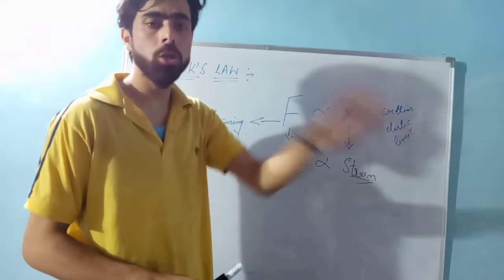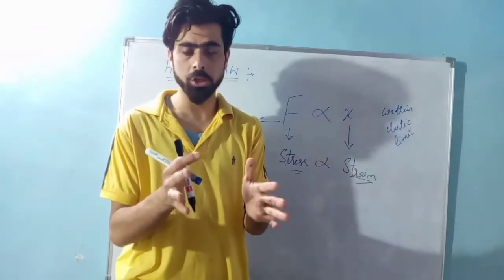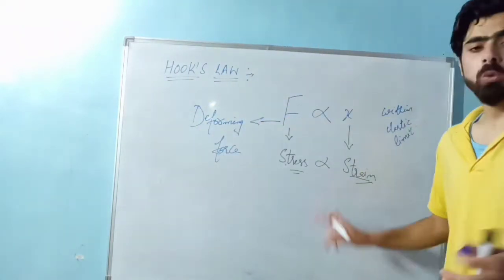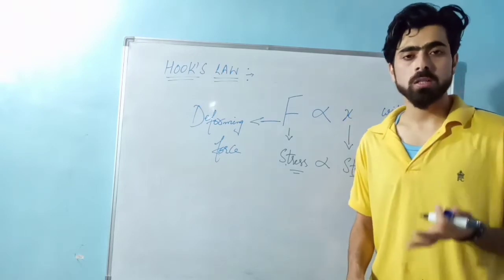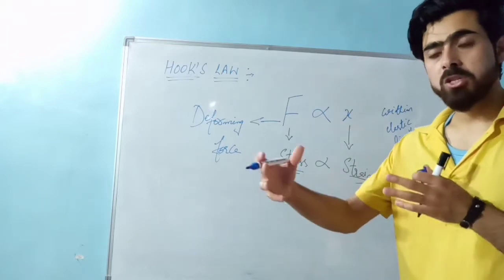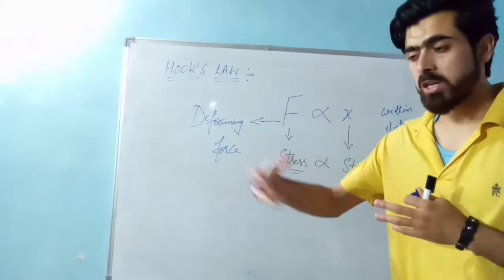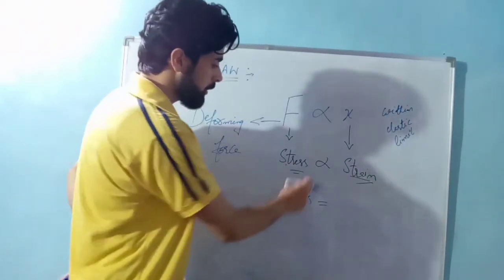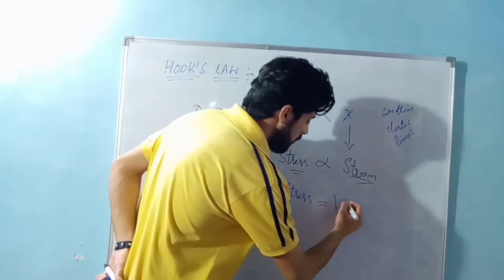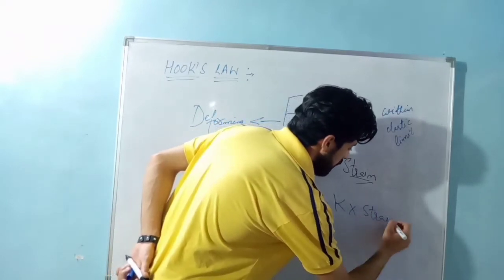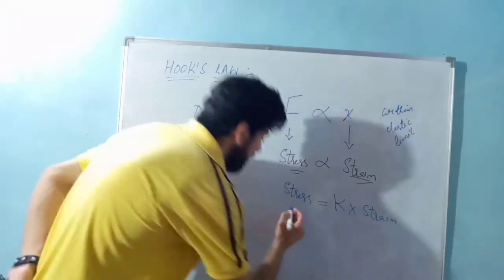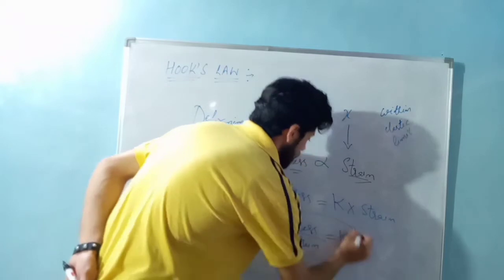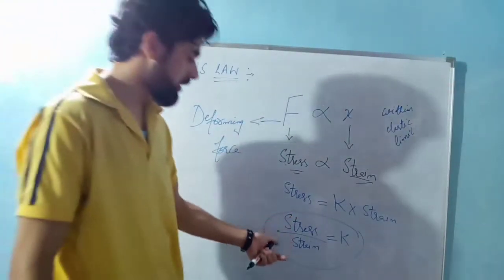It means that if any object is within the elastic limit, the stress produced is proportional to the strain. When we remove the proportionality sign, it becomes a constant. We call it the modulus of elasticity. Modulus of elasticity means measurement of elasticity — it is a constant that defines the elasticity of an object. We can write: stress is equal to K into strain, or stress divided by strain equals K.